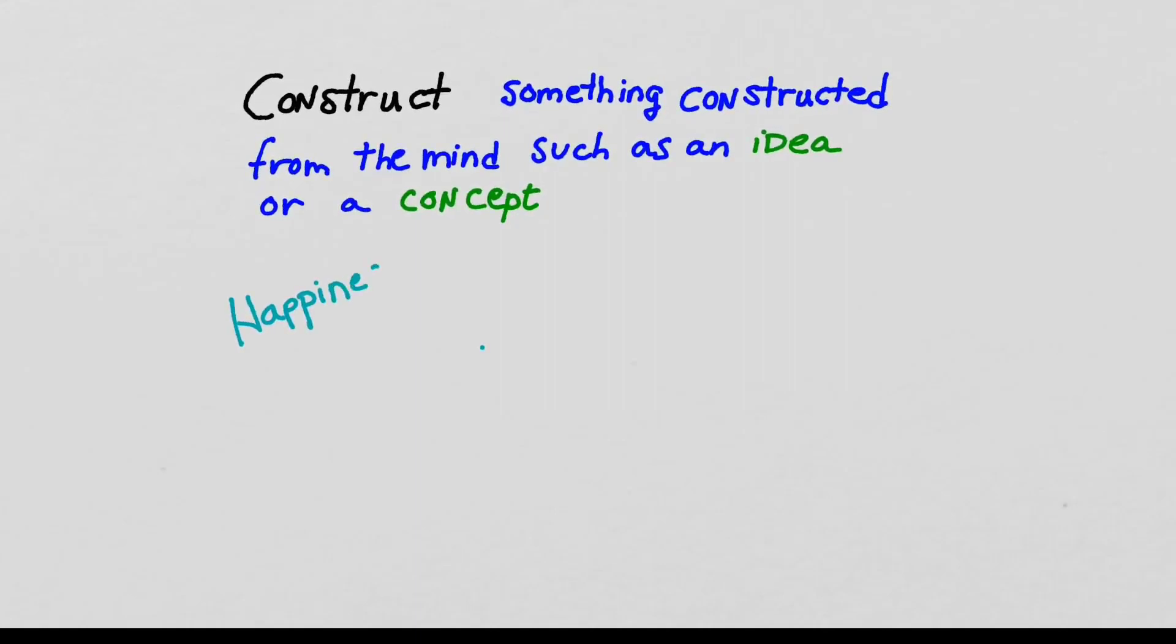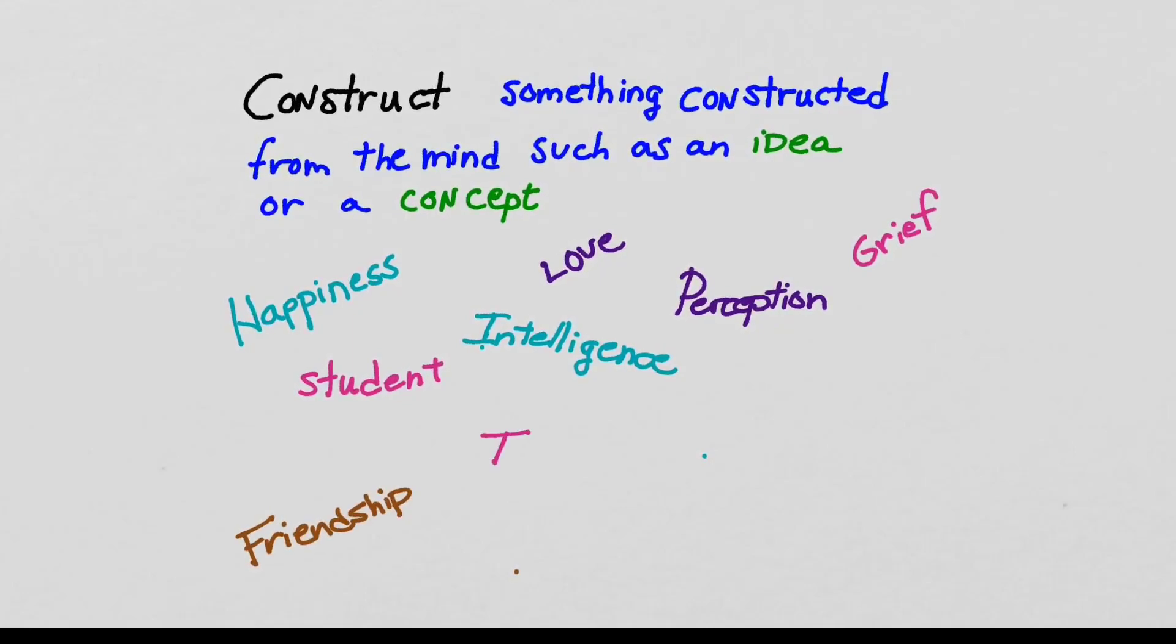So what is a construct? Happiness is a construct. Student, Love, Intelligence, Perception, Grief, Friendship, Thought, Color, Bias, Time, Boredom, Loneliness.